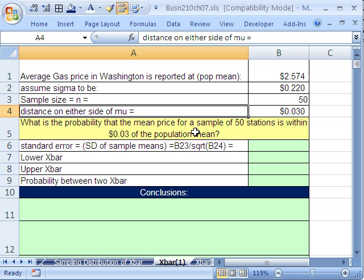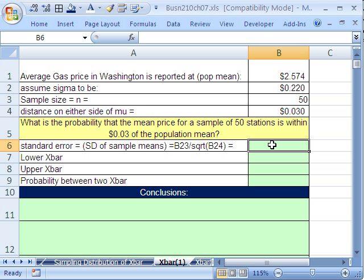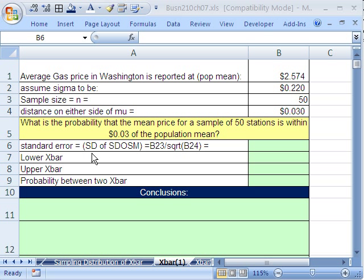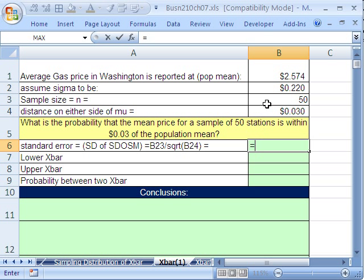Let's calculate the standard error or standard deviation of the sampling distribution of means. Our standard error equals we will take our population standard deviation, and we'll divide it by the square root of our n. So our standard deviation for this distribution will be 3.1 cents.